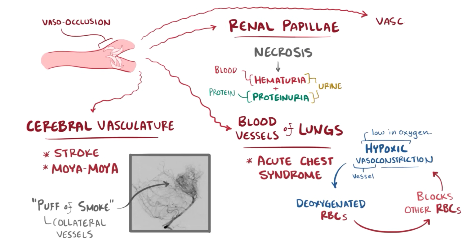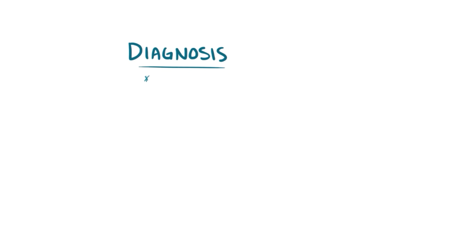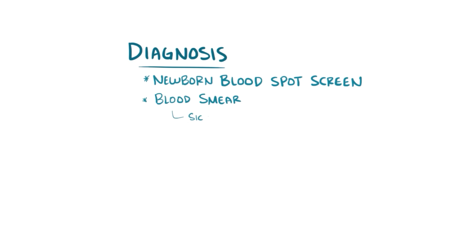And in men, clogging in the vasculature of the penis can cause priapism, a painful and prolonged erection. Given all of these symptoms, it's important to diagnose sickle cell as early as possible, so it's included in the newborn blood spot screen in some countries, and can also be identified with a blood smear looking for sickled cells or by identifying HbS using protein electrophoresis.